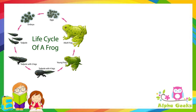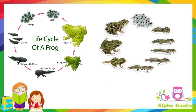The tadpole has a tail and starts to grow legs. The legs grow longer and the tail grows shorter. The young frog now begins to look like its parents. The adult frog loses its tail and can now live on land. When an organism changes a lot from young to adult stage, this process is called metamorphosis.